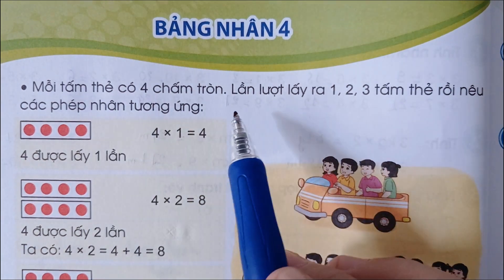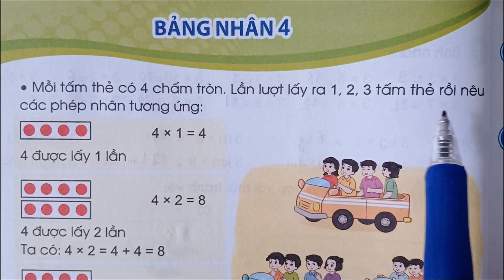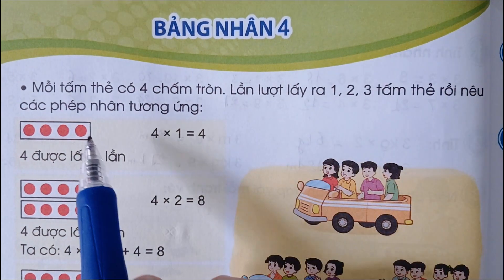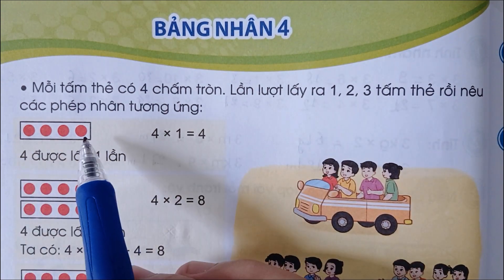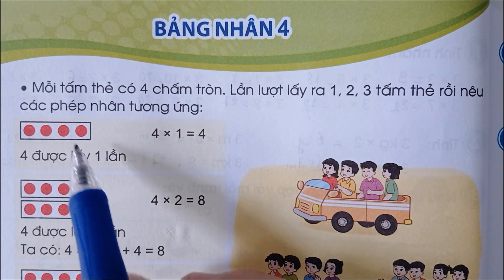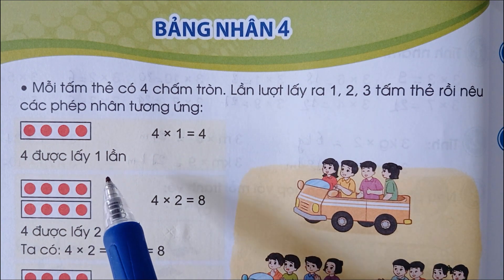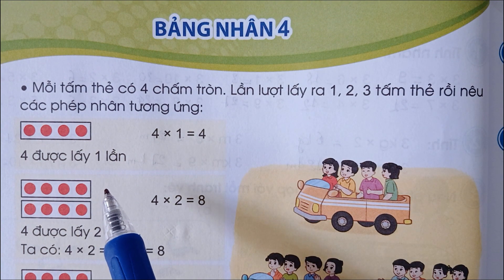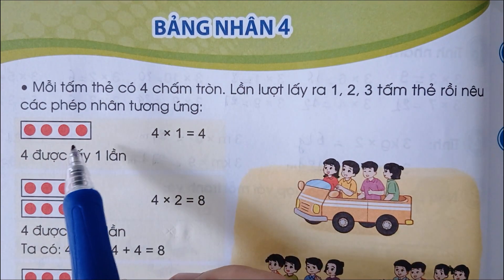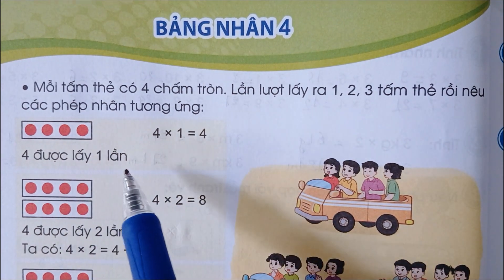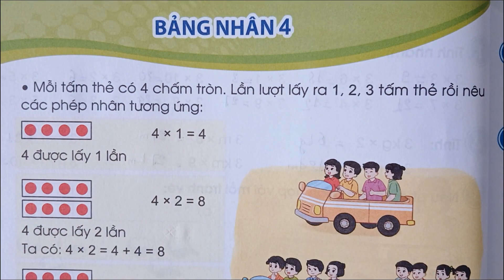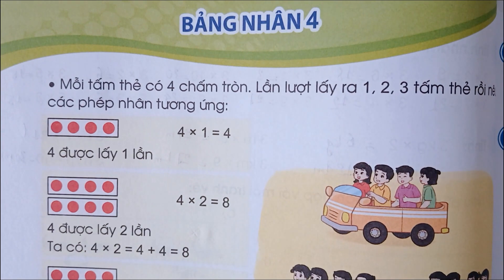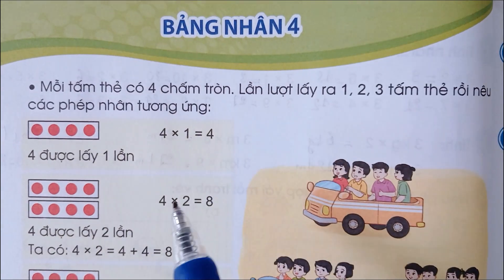Mỗi tấm thẻ có 4 chấm tròn, lần lượt lấy ra 1, 2, 3 tấm thẻ rồi nêu các phép nhân tương ứng. Một tấm thẻ lấy ra có 4 chấm tròn, như vậy 4 x 1 bằng 4.